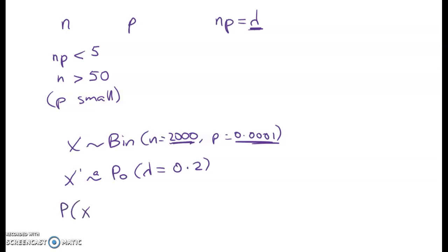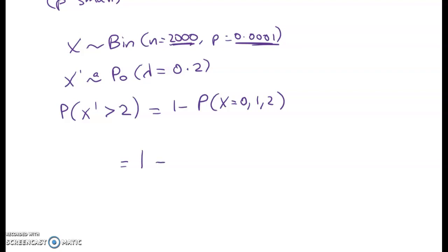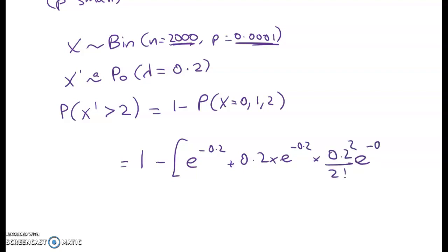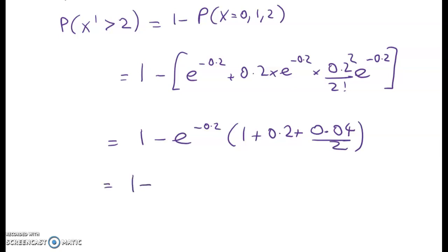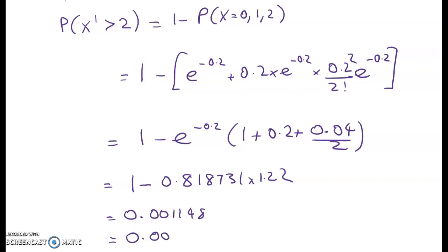We need to find the probability of more than two four-leaved clovers: P(X > 2) = 1 − P(X = 0, 1, or 2). That works out to 1 minus e^(−0.2) plus λ·e^(−0.2) plus (0.04/2)·e^(−0.2). Taking e^(−0.2) out as a common factor gives 1 − 0.818731 × 1.22, which gives a probability of 0.001148. Rounded to three significant figures, that's 0.00115.